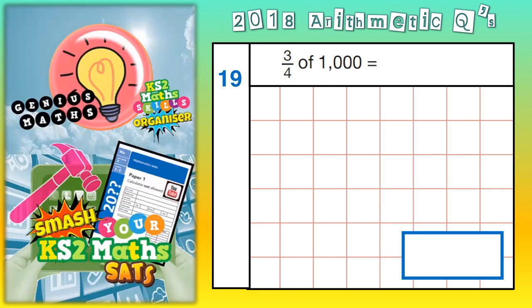Welcome all you arithmetic ninjas to question number 19. Three quarters of a thousand.